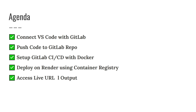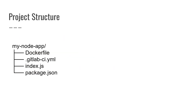In this session we are going to connect our VS Code with GitLab, push our code to GitLab repositories, create a CI/CD pipeline, deploy the container using Render, and see the live access of our URL. The project structure is simple: we'll use a Dockerfile, a .gitlab-ci.yml for the CI/CD pipeline, index.js, and package.json.